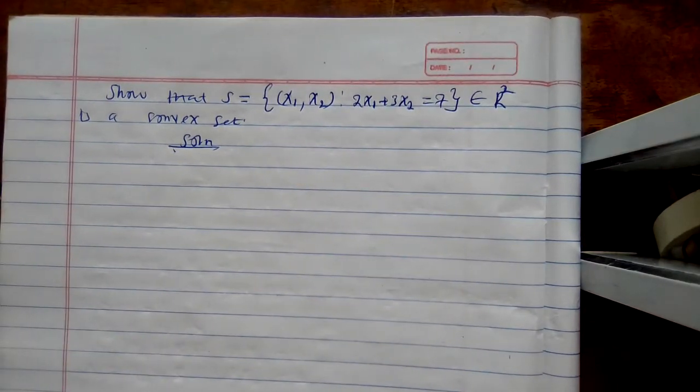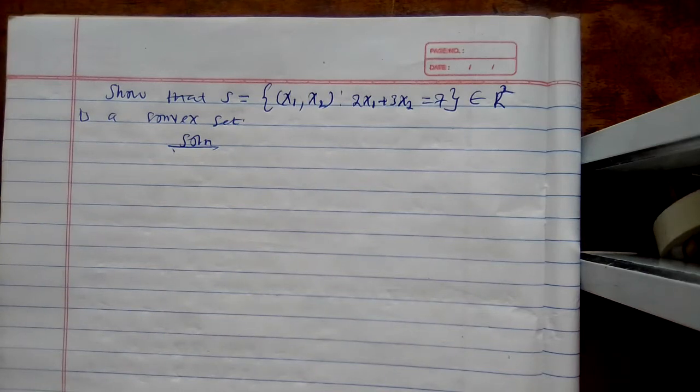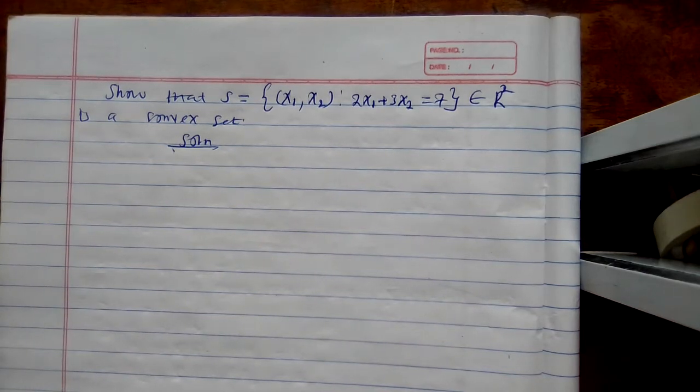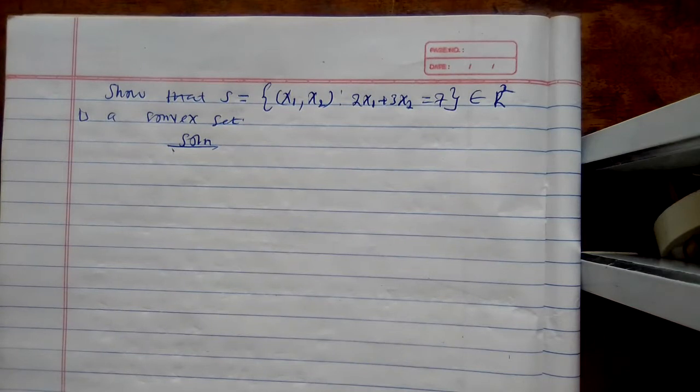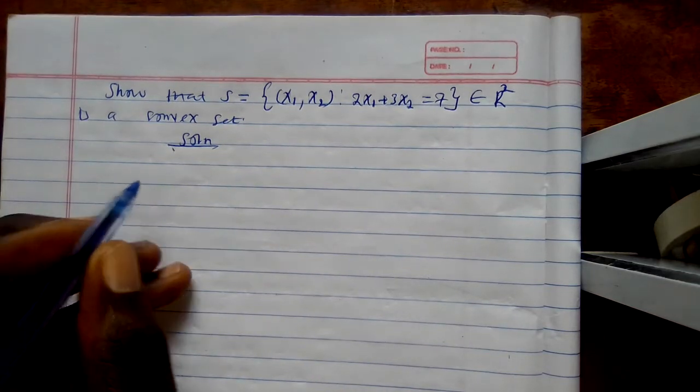Show that S is equal to (x1, x2) such that 2x1 plus 3x2 is equal to 7 in R² is a convex set. Solution: